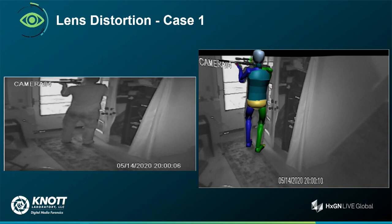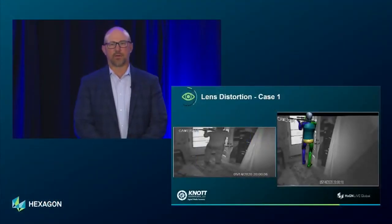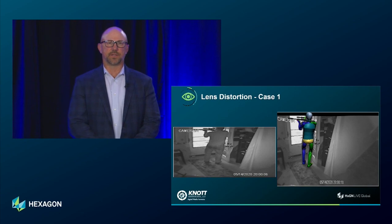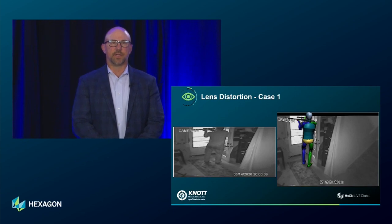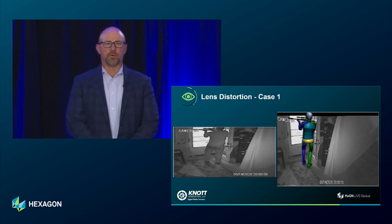In this instance, we were tasked with figuring out exactly where a rifle was pointed at a specific point in time. We went through the process — first thing was removing the lens distortion. When you correct for lens distortion, you can actually see that the staircase is now viewable on the right side of the photograph.